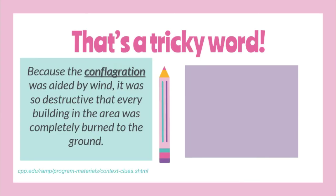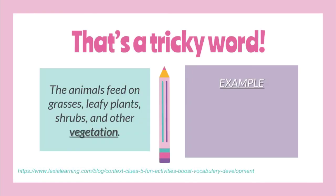'Because the conflagration was aided by the wind, it was so destructive that every building in the area was completely burned to the ground.' Conflagration is being described as destructive, and it burned the buildings — thus, conflagration means fire, and the context clue type is explanation. Next: 'The animals feed on grasses, leafy plants, shrubs, and other vegetation.' This sentence shows example clues, and from the given examples we can say that vegetation refers to plants in general.